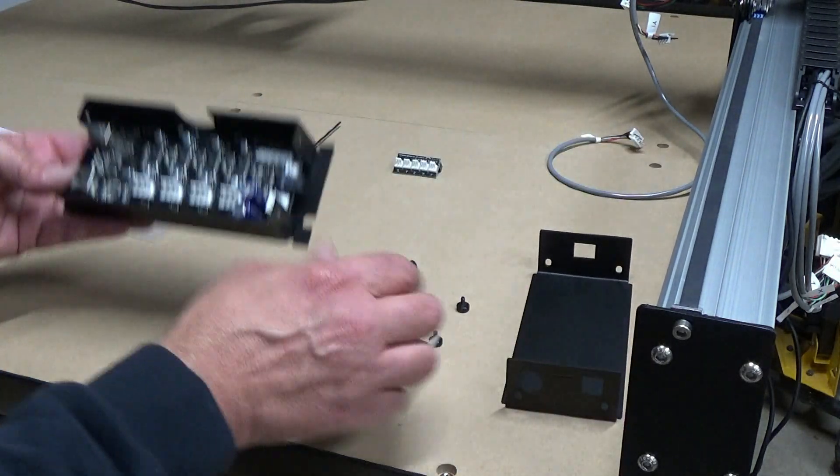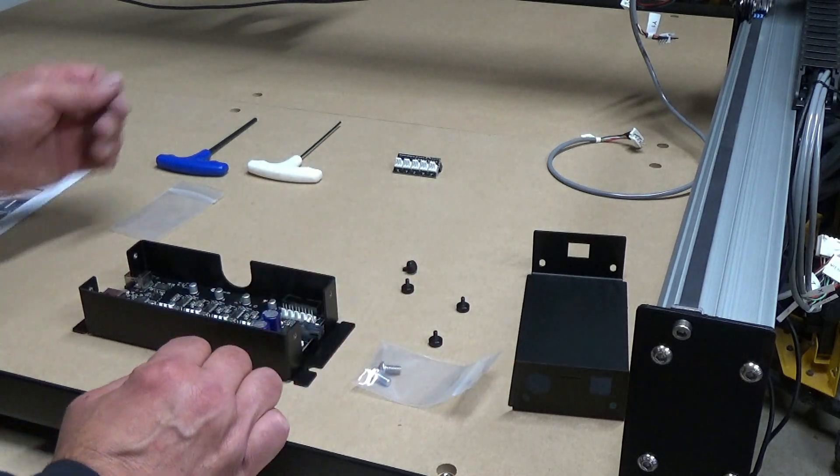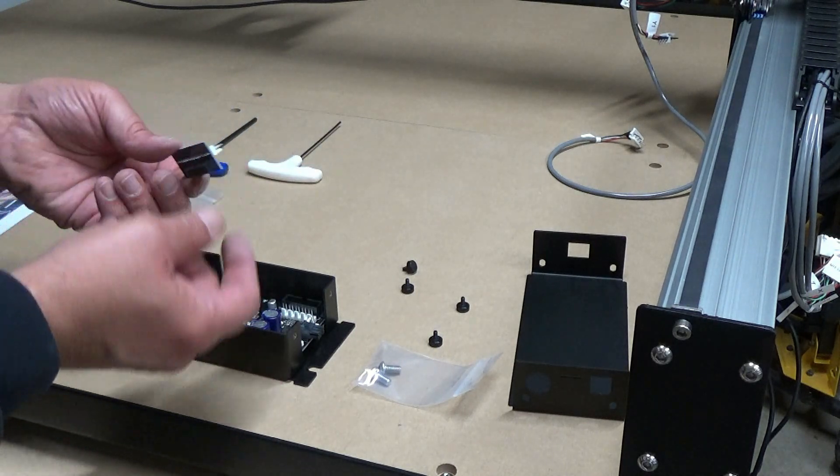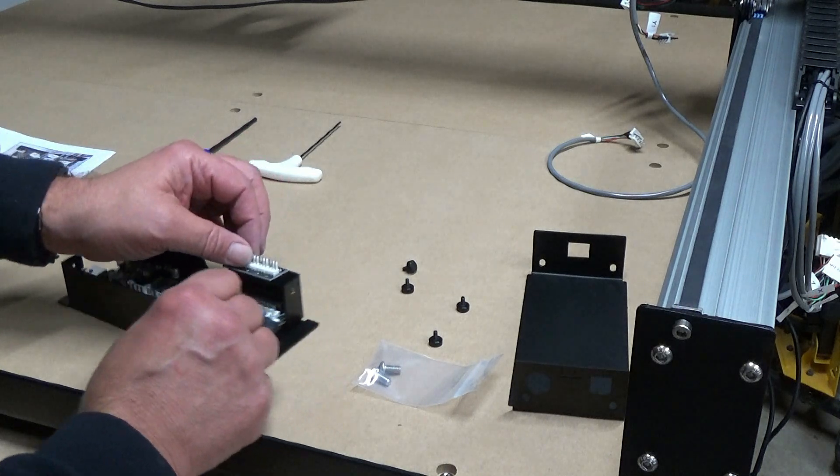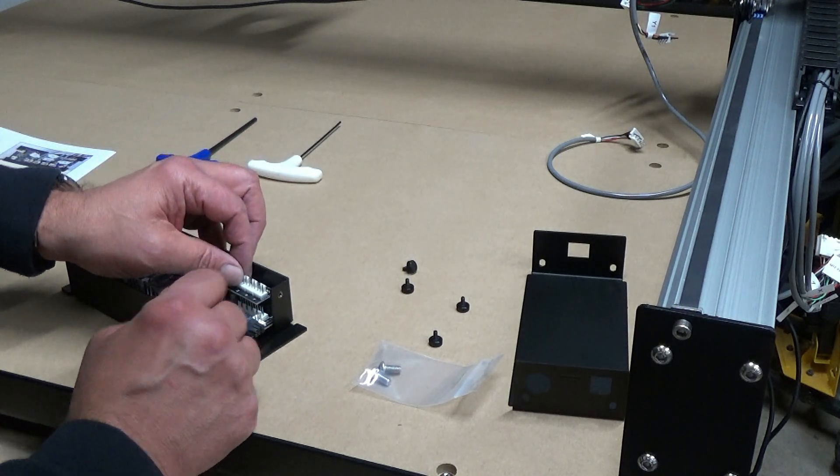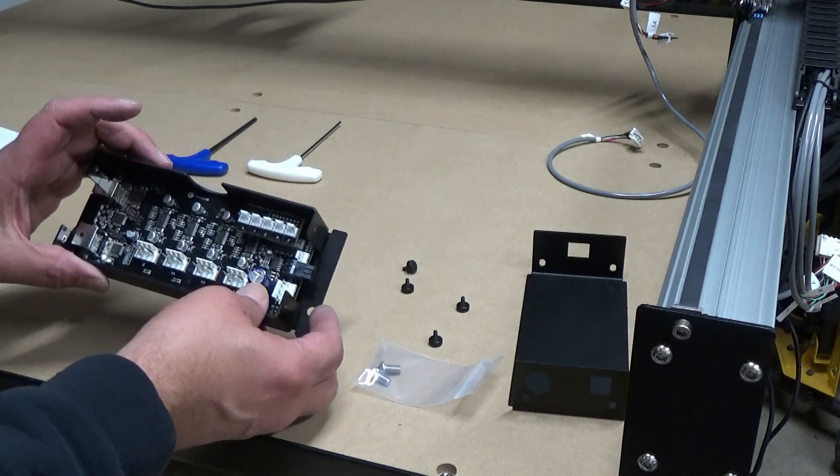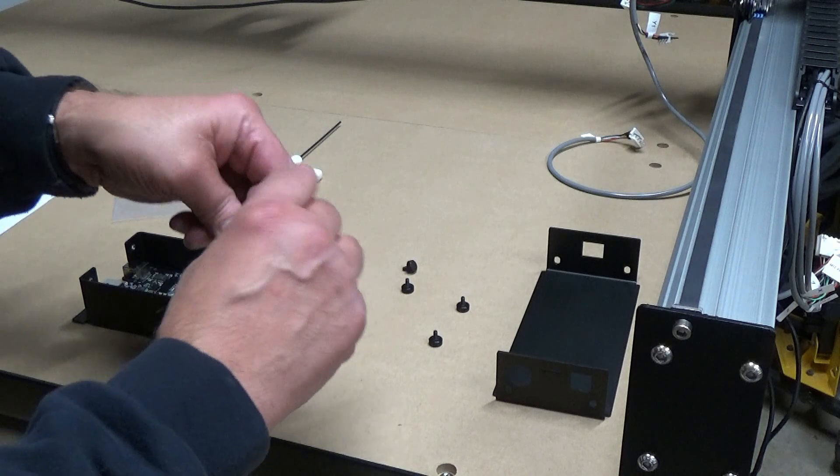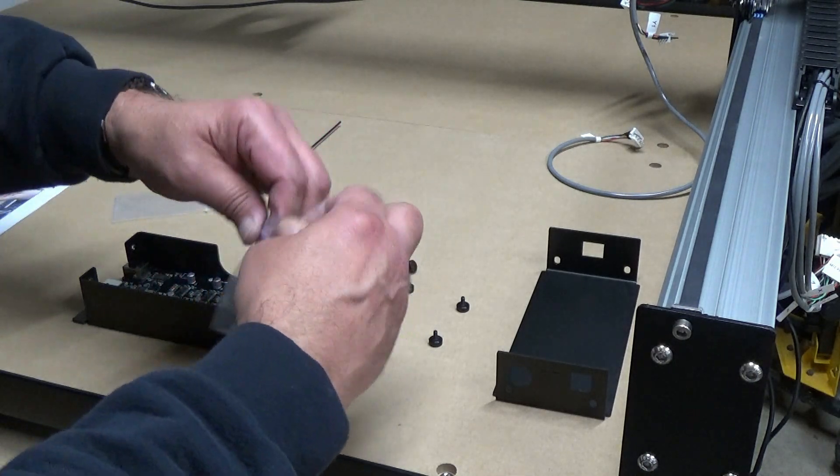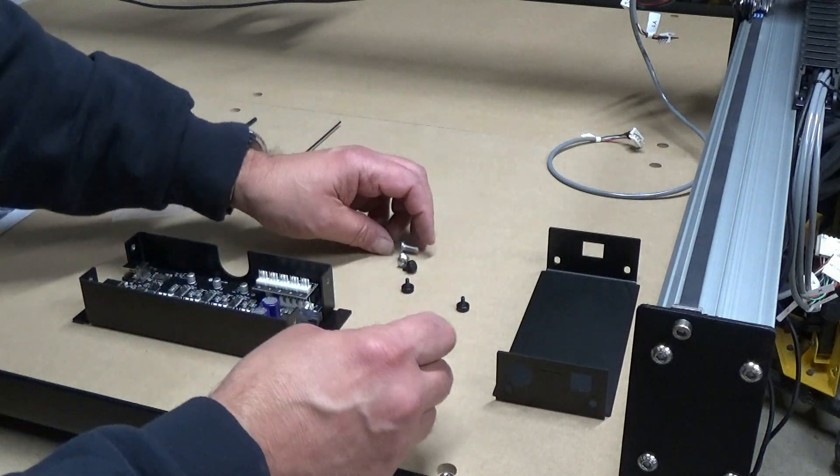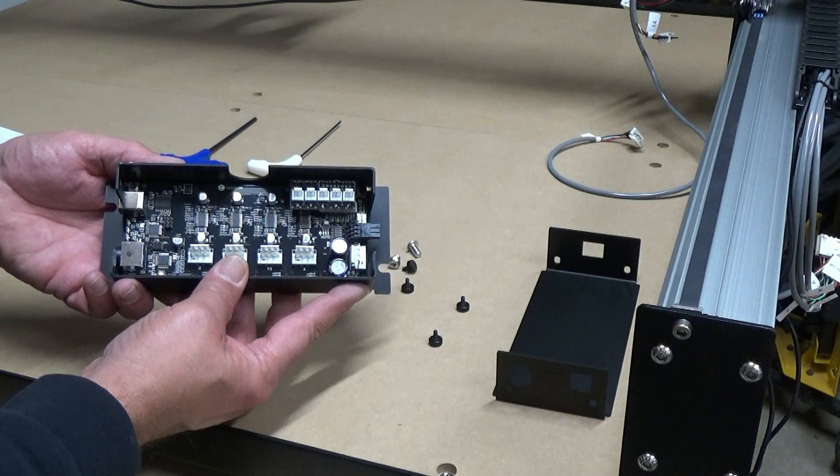There's two screws that mount the control board onto the wire rail. And we also have a PCB riser board. And that just locks into here so we're going to go ahead and connect that. Just like so. Now we can take and mount that to our wire rail. And then we can start wiring things up.